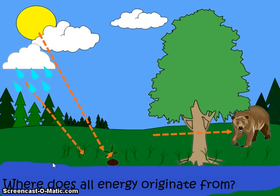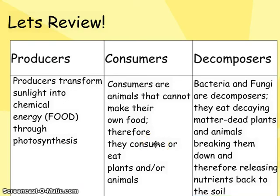Now let's talk about producers, consumers, and decomposers. Producers are things that create their own energy through photosynthesis — they take light energy from the Sun and convert it into chemical energy, which is food. Consumers are animals that cannot make their own food, so they must consume other things — plants and/or animals — to get energy. Decomposers break down dead plants and animals, releasing the nutrients back into the soil — hence the circle of life.